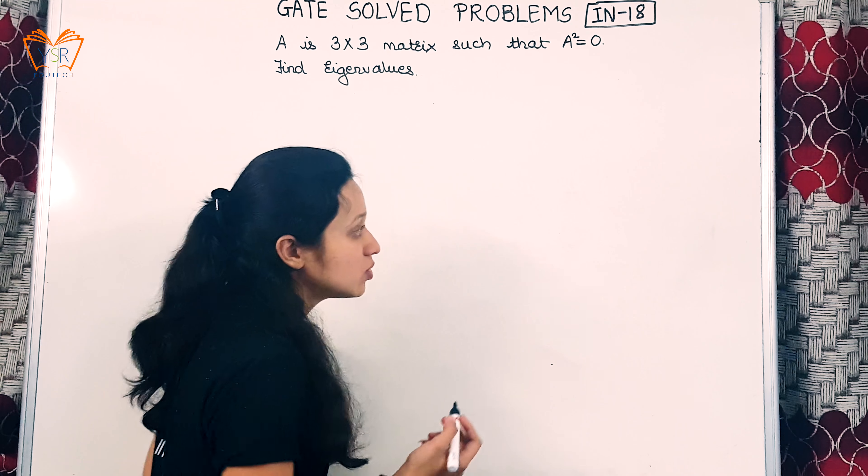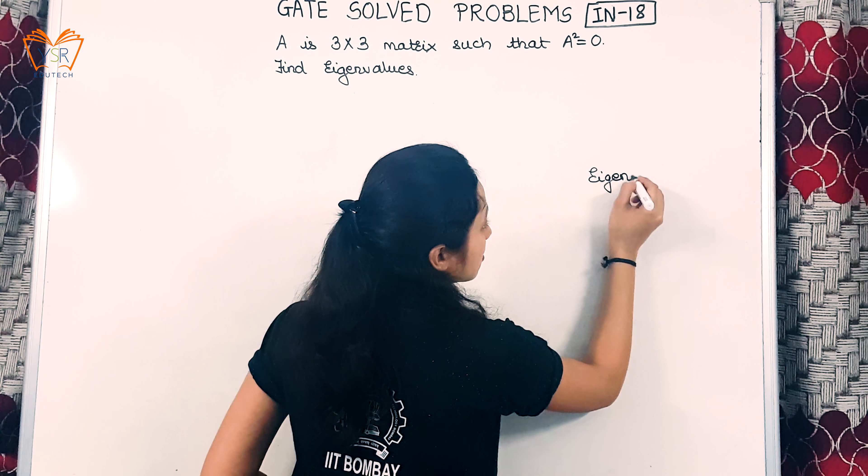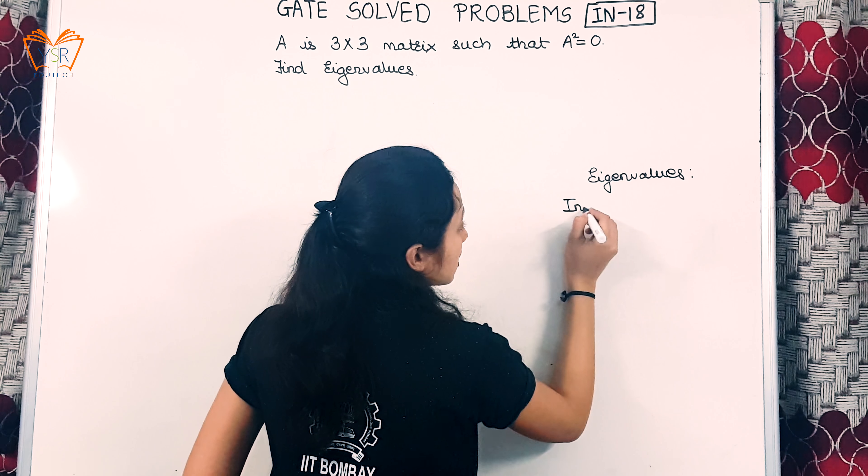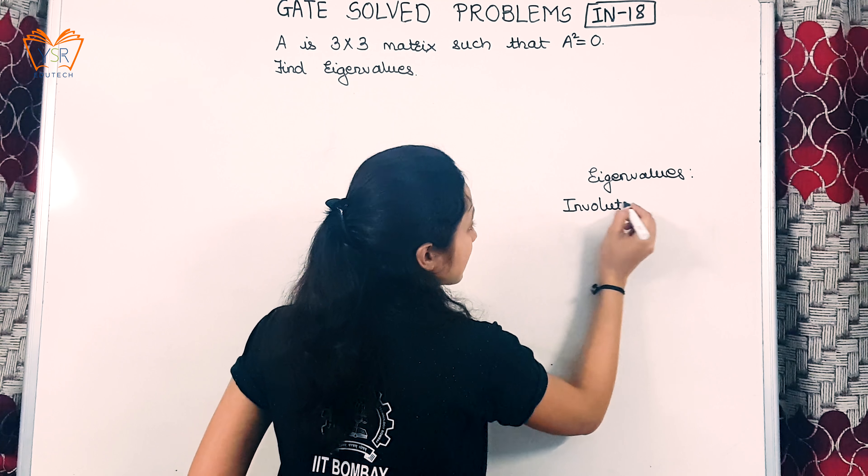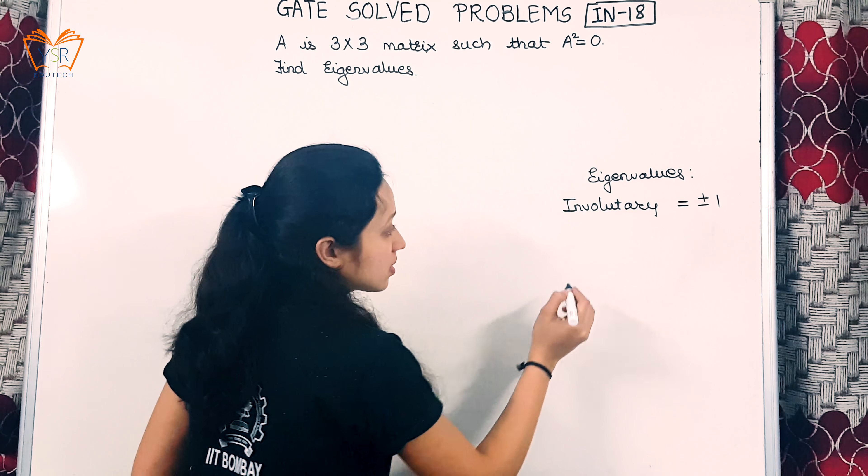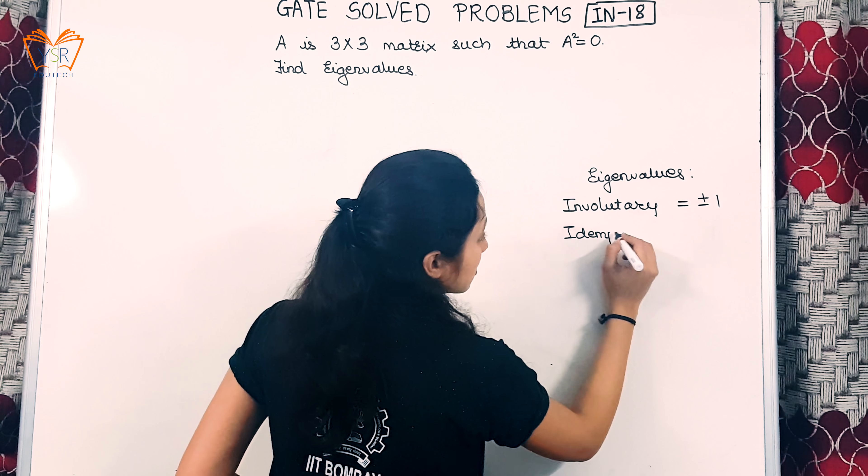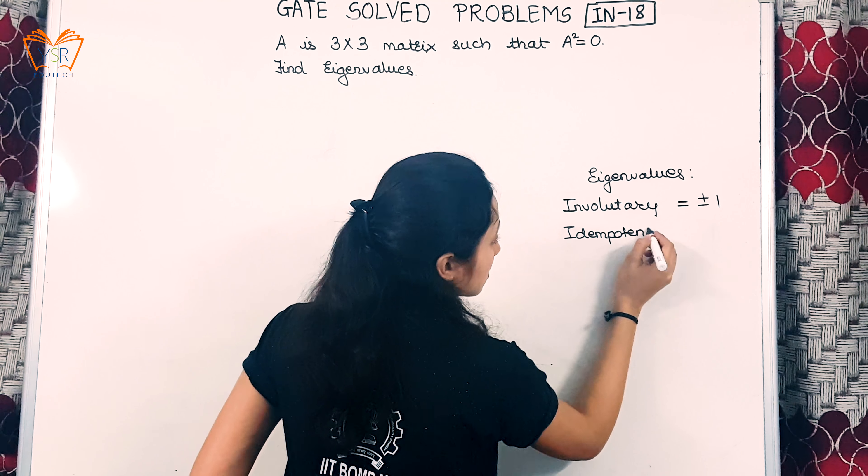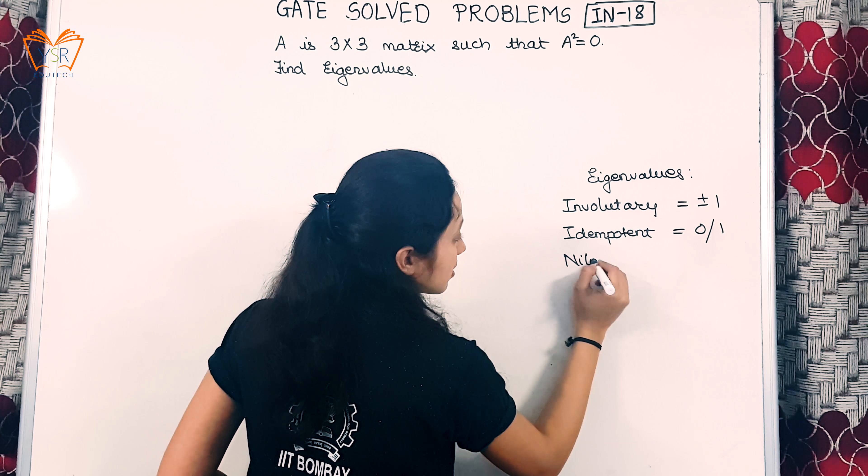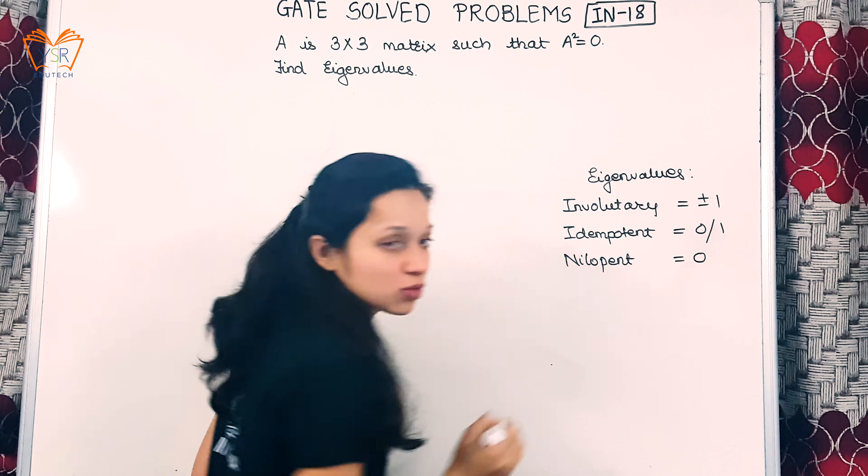Now in one of the video tutorials we have studied that eigenvalues for involuntary matrix are plus or minus 1, for idempotent are 0 or 1, and for nilpotent the eigenvalues are 0.